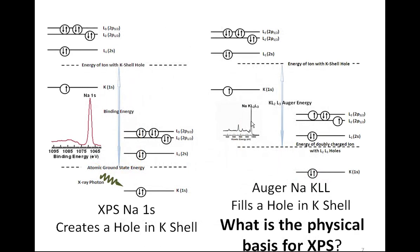The existence of Auger lines in an XPS spectrum is an indirect consequence of the photo-ionization process. These Auger lines rely on the final product of a photo-ionization event — an excited state with a hole in the K shell. The photon enters the electronic system, interacts with the K shell, and creates a new entity: the ion. The photoemission peak is evidence that this process is occurring, and this is a necessary condition for the start of the Auger process.